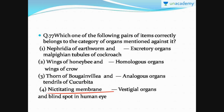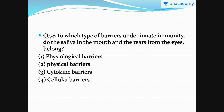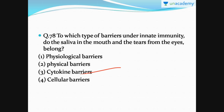The nictitating membrane and blind spot in the human eye are not vestigial — the blind spot is still in use. Question number 78: to which type of barriers under innate immunity do saliva in the mouth and tears from the eyes belong? Saliva and tears belong to the physiological barriers — option number one is correct. Other barriers include physical barriers like skin, cytokine barriers such as interferons, and cellular barriers which are your lymphocytes.